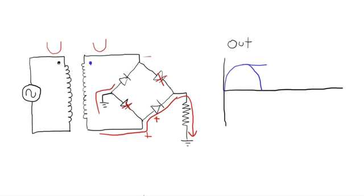It comes back, and again, the only option for current flow is through here. Again, two diodes conducting, 1.4 volt voltage drop, giving us the second half of our sine wave flipped over again with a 1.4 volt loss.